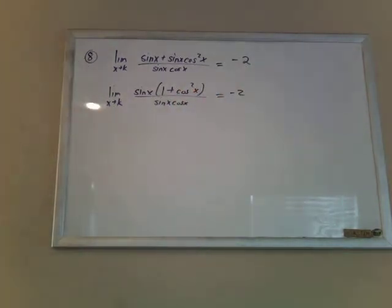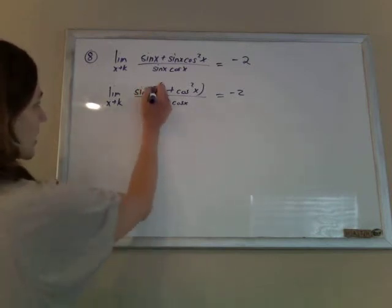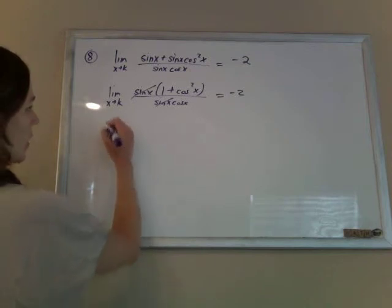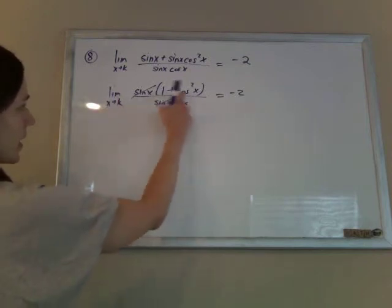And we want that to equal negative 2. Then one of these sine x's will cancel. So then I just have the limit as x goes to k of that.